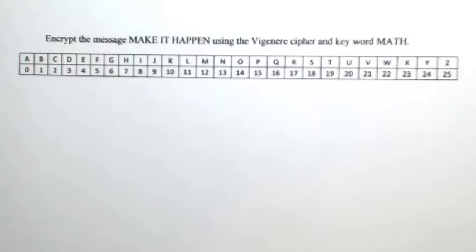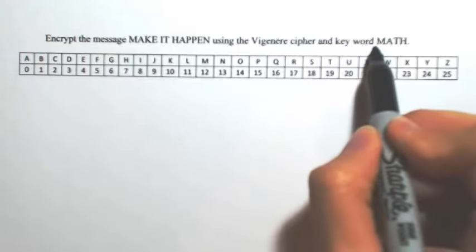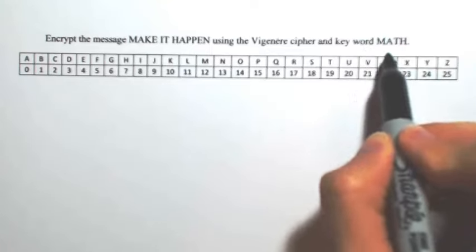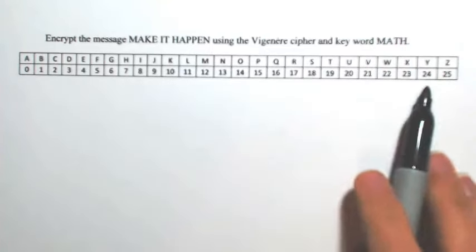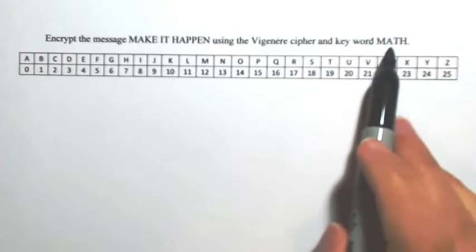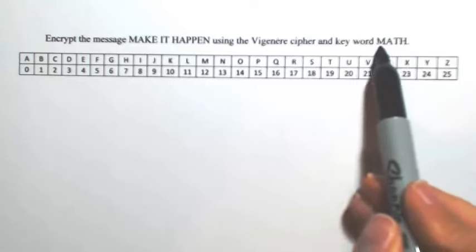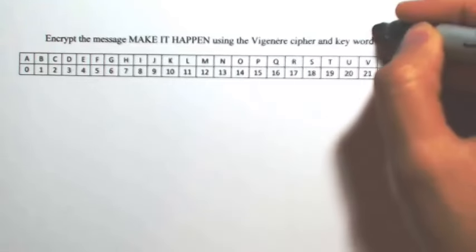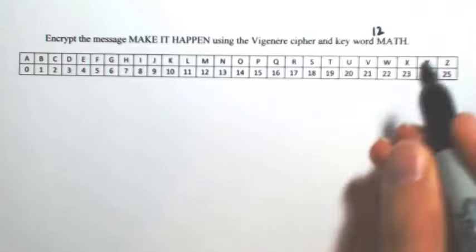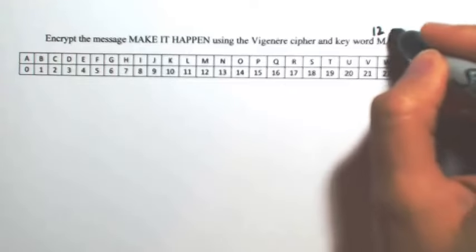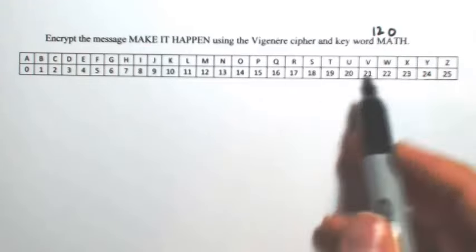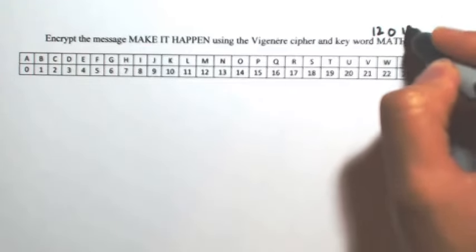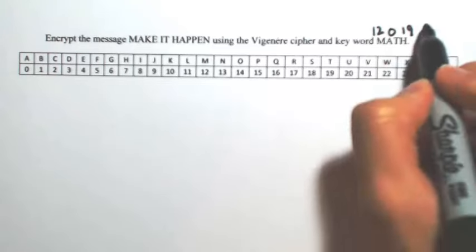Encrypt the message using the Vigenère Cipher and the keyword 'math'. When using the Vigenère Cipher, our keyword is what shifts all of the letters. Going through this list, I'm going to mark out what each letter is shifted with. So M will shift by 12, A shifts 0, T shifts 19, and H shifts 7.